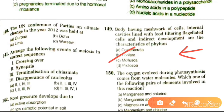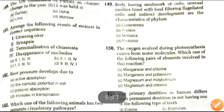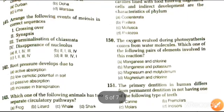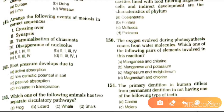Next question: oxygen evolved during photosynthesis comes from water molecules. Which pair of elements is involved in this reaction? Options are manganese and chlorine, manganese and potassium, magnesium and molybdenum, or magnesium and chlorine. The answer is manganese and chlorine.